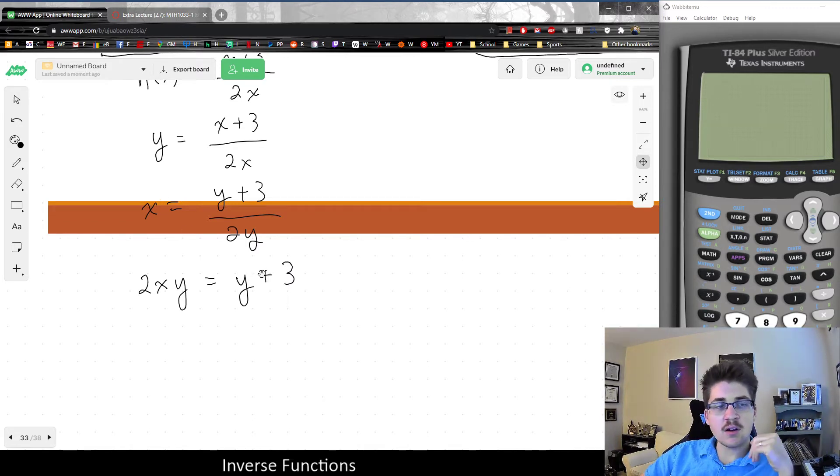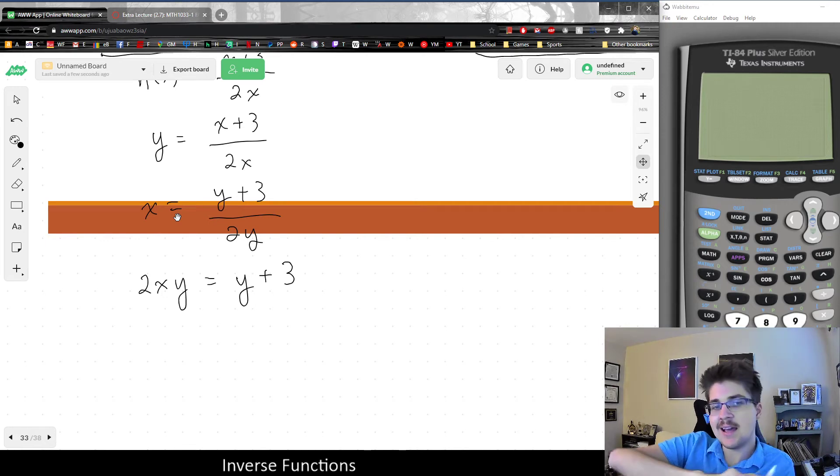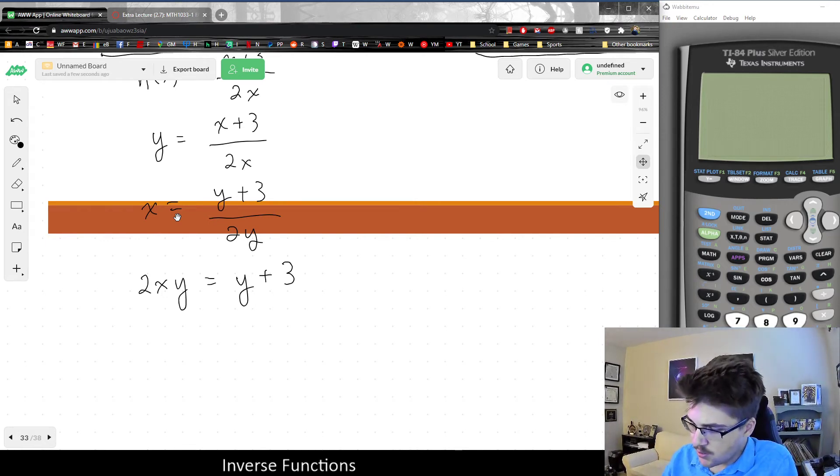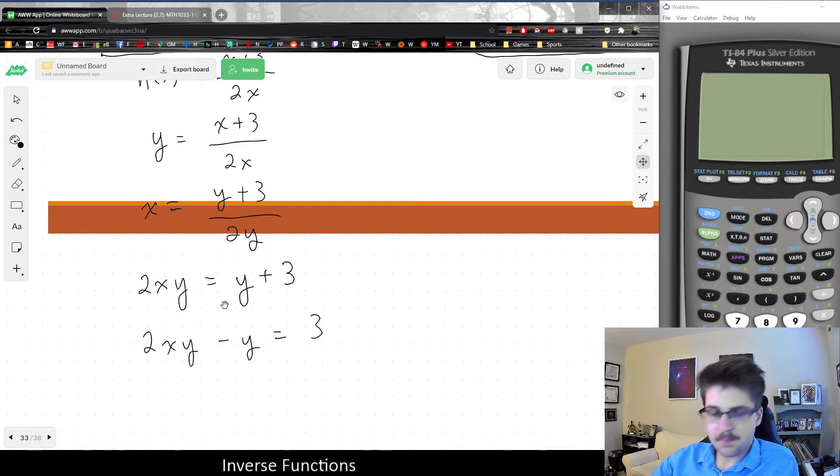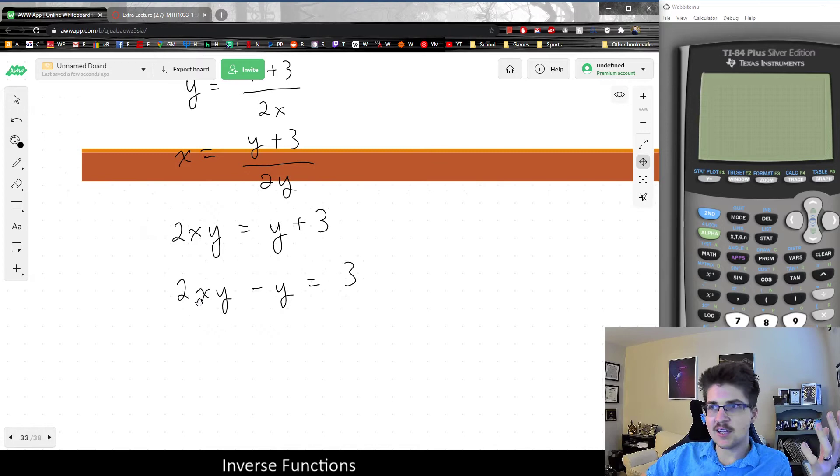And now, our last goal is to, since we're trying to get y by itself, what I would do in this case is put all the y's, every term that has y on one side and every term that does not have y on the other side. Which in this case, if I just subtract y to the left-hand side, that would give me 2xy - y = 3.